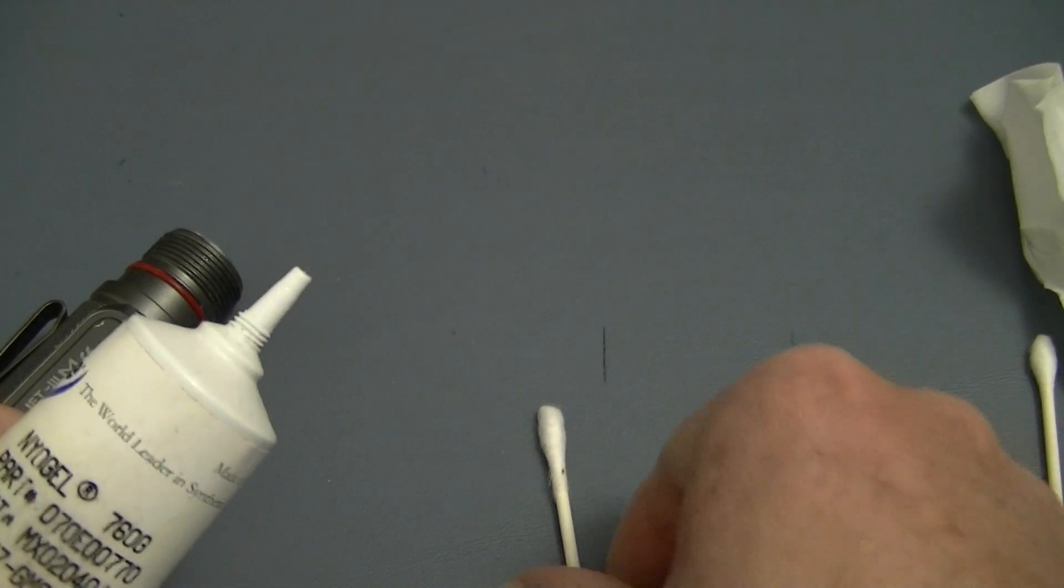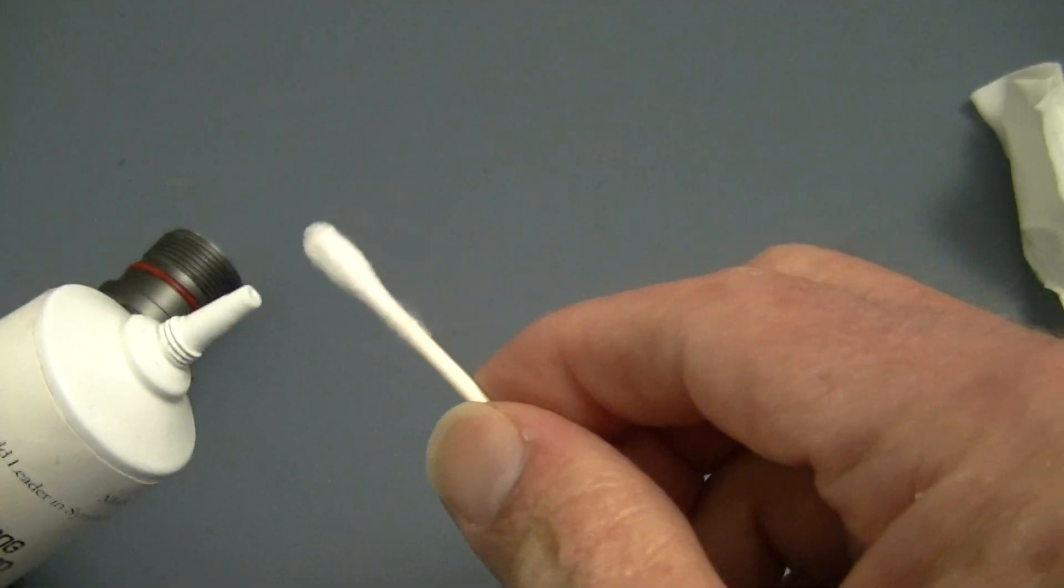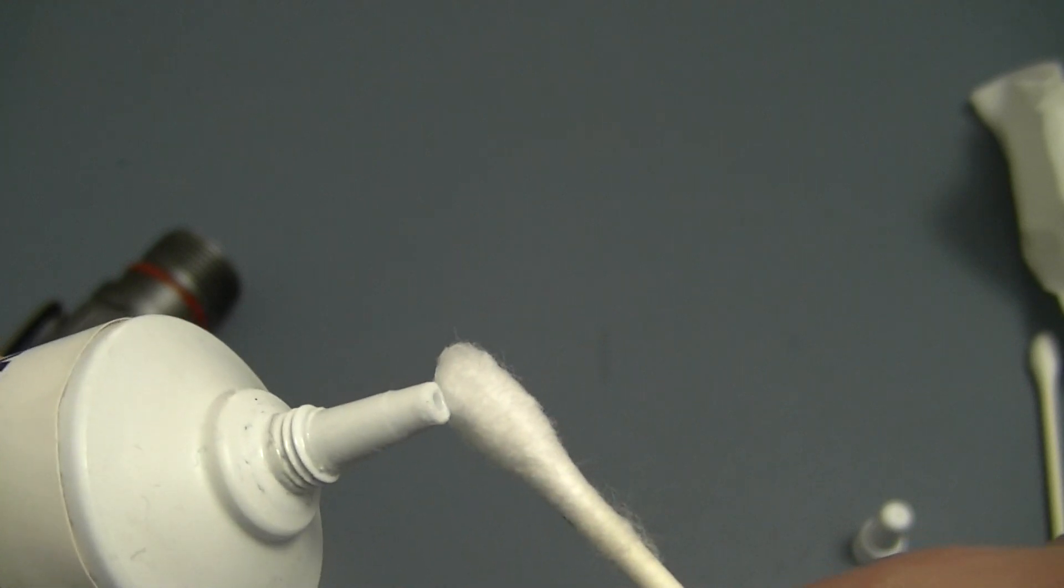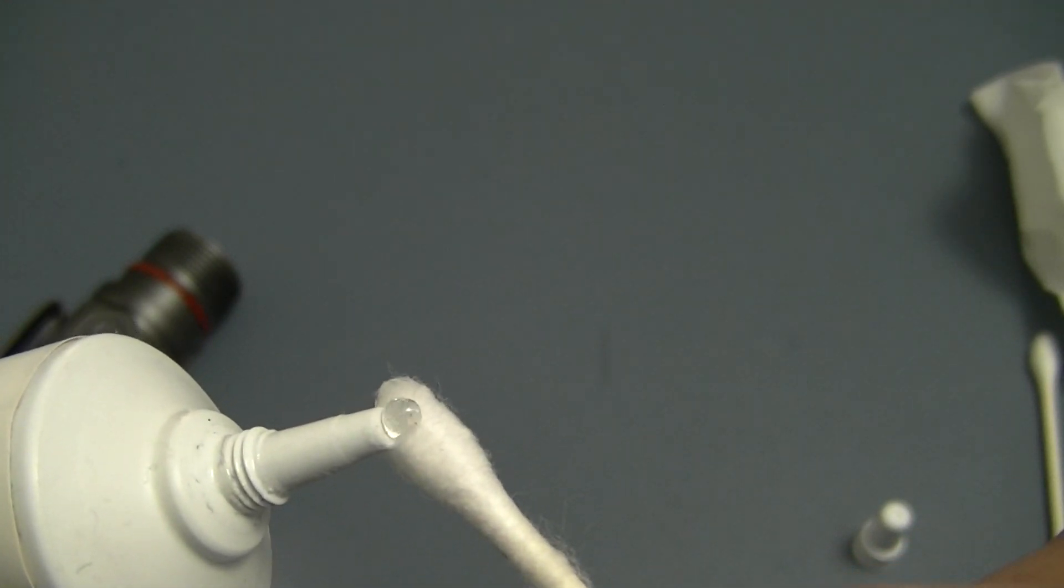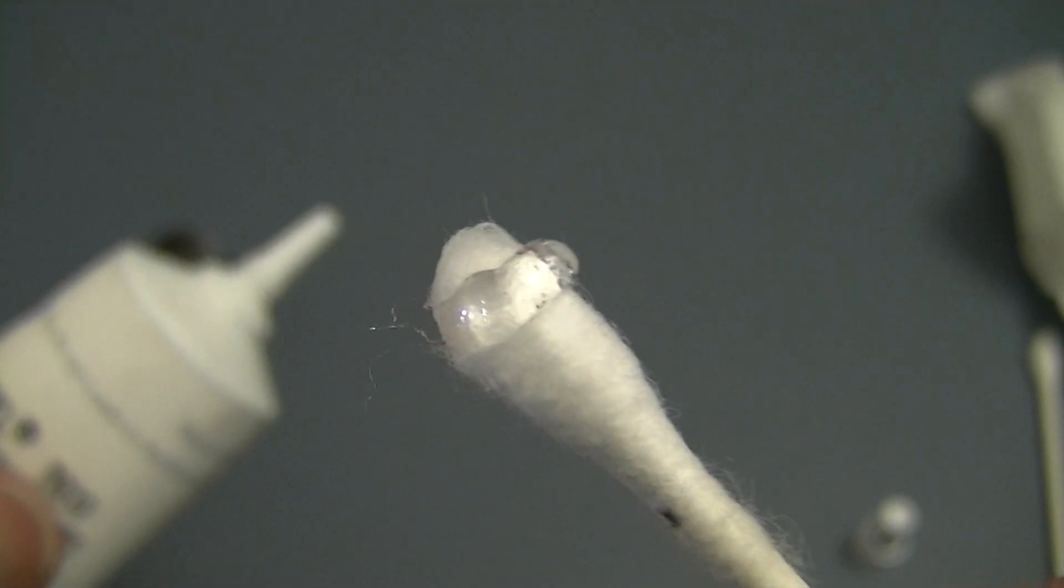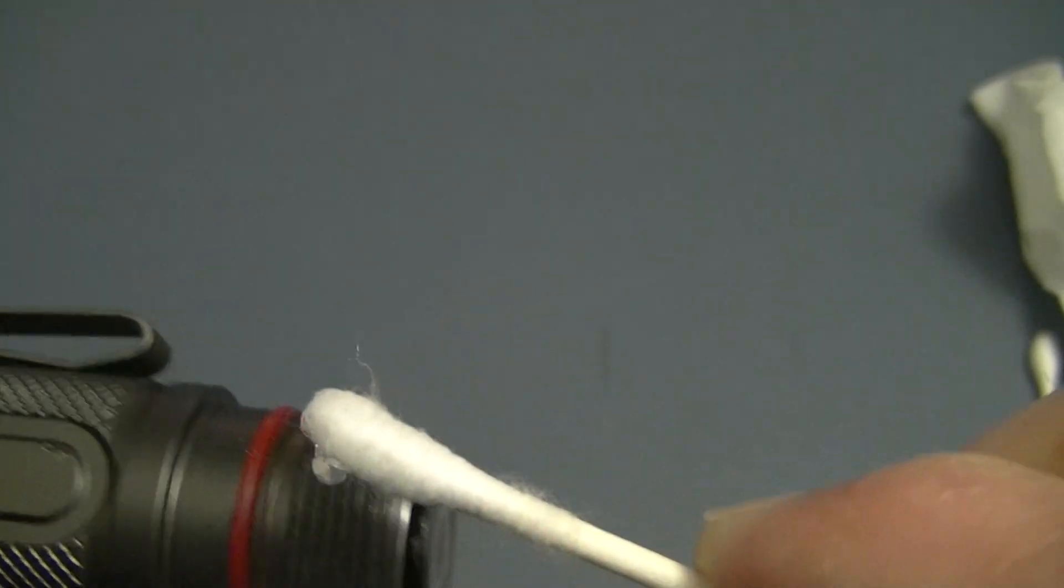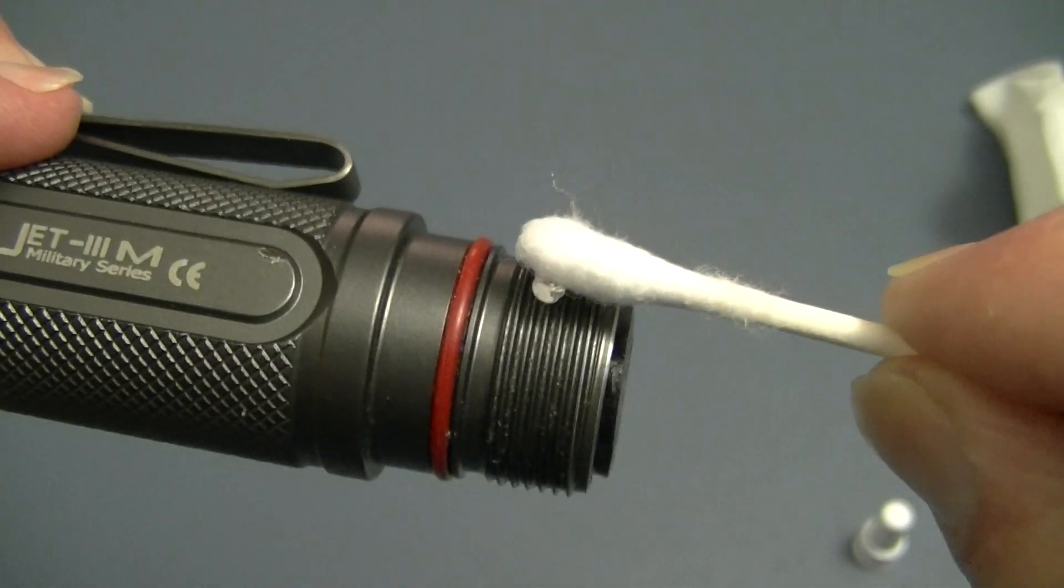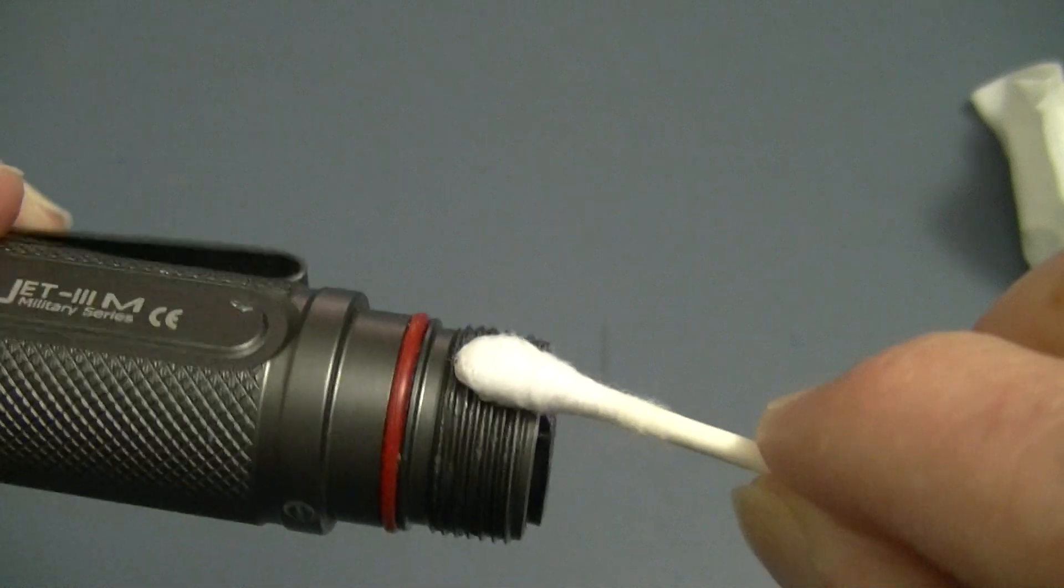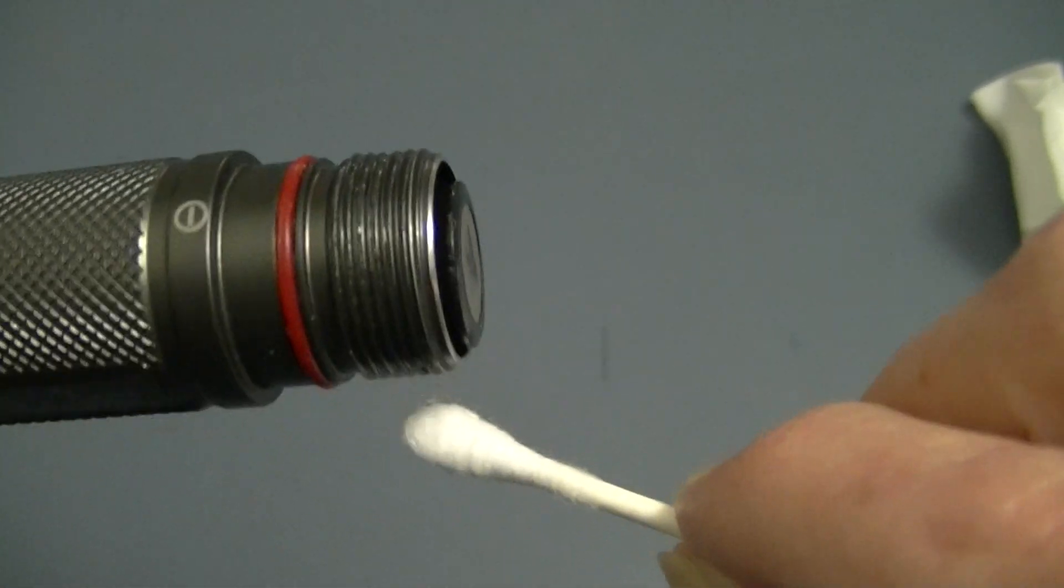But all you do is take a little bit of it, and you don't need a lot. You can either put it on one of your fingers or put it on the end of a Q-tip. Let's see, let's get a little bit closer here. As I say, you do not need a lot. It is clear and it has a nice consistency to it. All you do is take that little bit and then start cleaning around the threads.